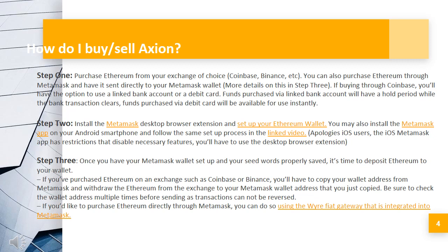How do I buy or sell Axion? Step 1: Purchase Ethereum from your exchange of choice — Coinbase, Binance, etc. You can also purchase Ethereum through Metamask and have it sent directly to your Metamask wallet. More details on this in Step 3. If buying through Coinbase, you'll have the option to use a linked bank account or a debit card. Funds purchased via linked bank account will have a hold period while the bank transaction clears.